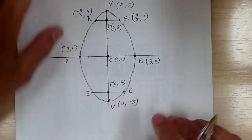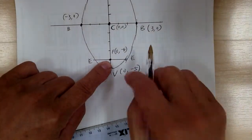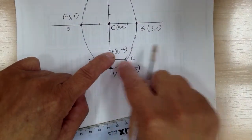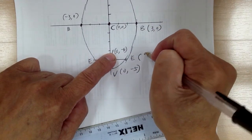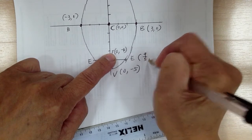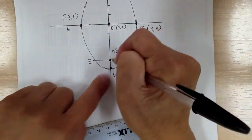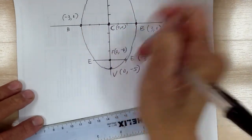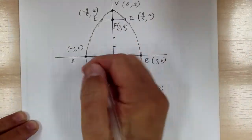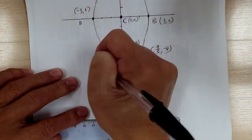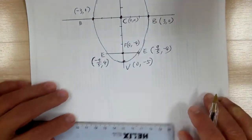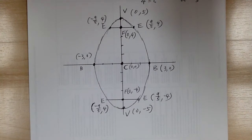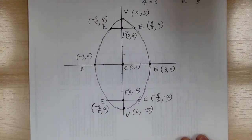Same thing for the other focus at (0, -4). When you go sideways that's the x-direction, so you change x and y stays the same. So it would be (9/5, -4), and when you go negative you subtract, so (-9/5, -4). And that's everything — double check, then sketch the curve. That's it for number 2.